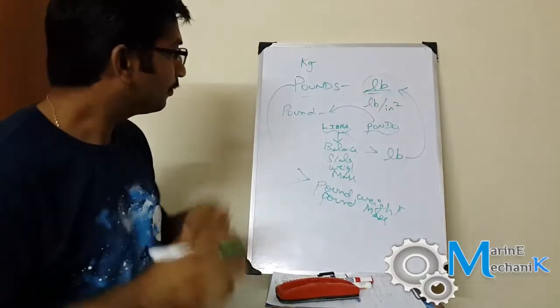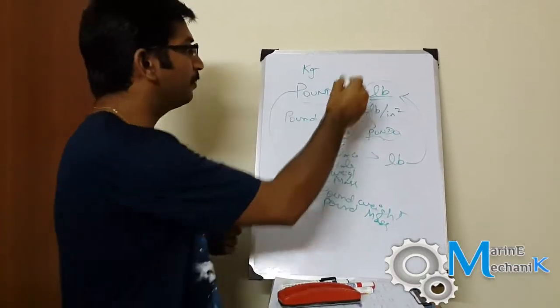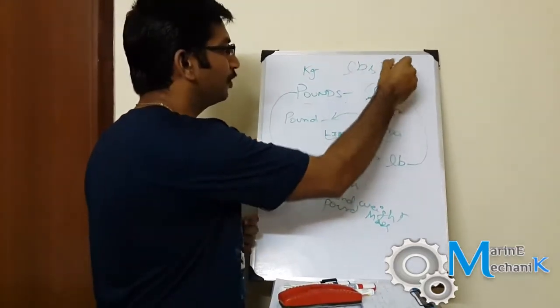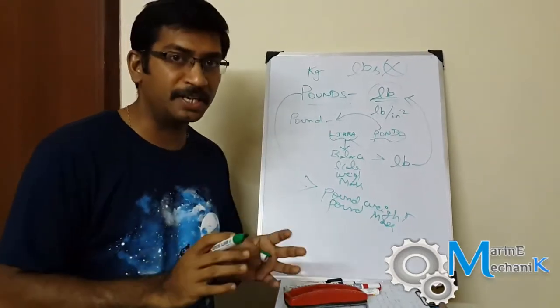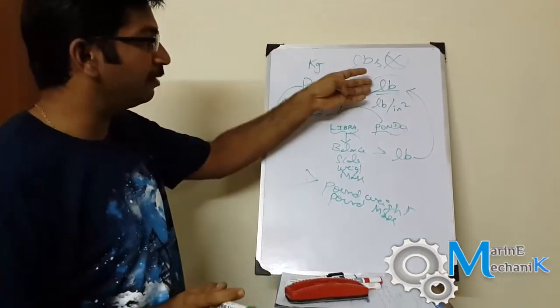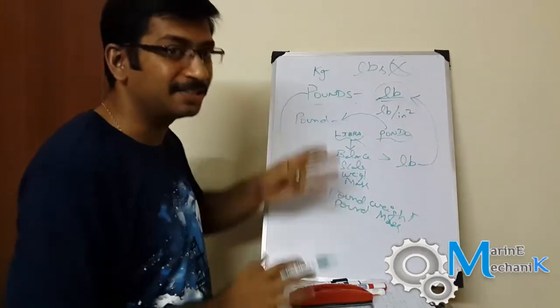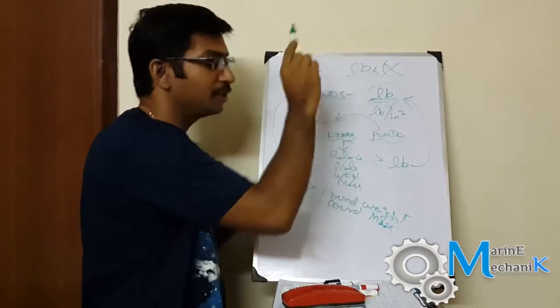Thus, pound is referred as LB. Sometimes people use LBS, which is not correct. LB is right. Pound is singular, pounds is plural - that doesn't mean LB is singular and LBS is plural. LB must be used; LBS is wrong notation.